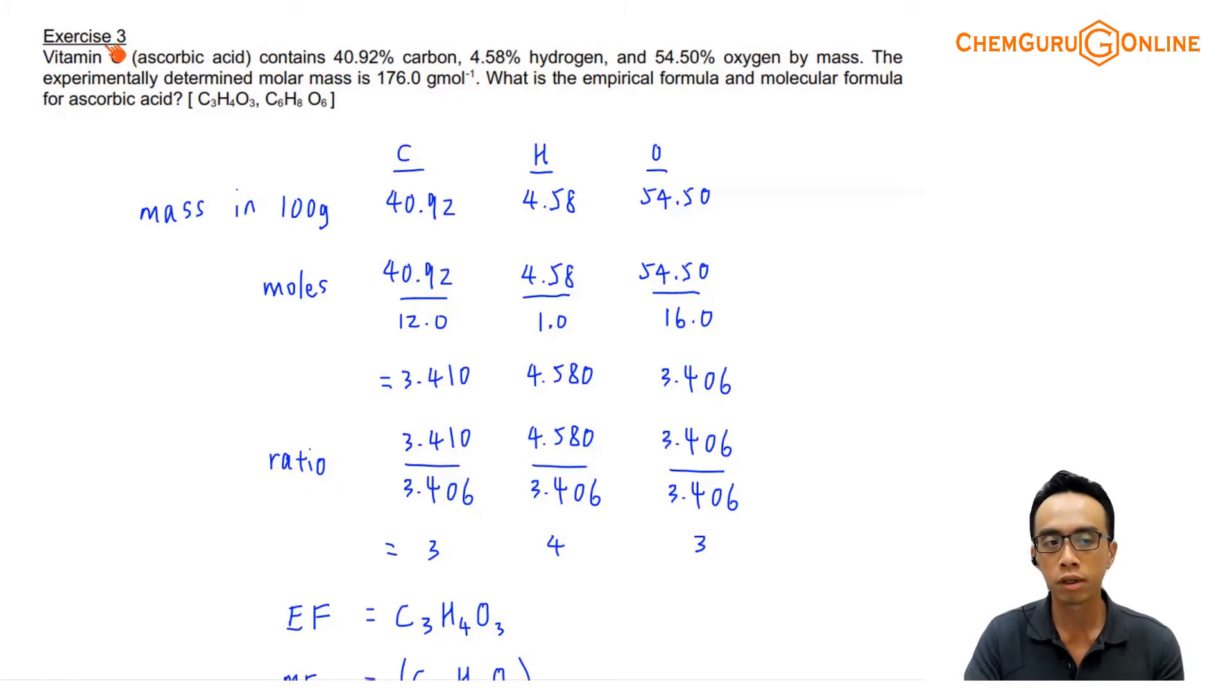Exercise 3. Given vitamin C, contains all these different percentages of my carbon, hydrogen, and oxygen by mass. Correct? Then experimentally, determine molar mass is 176.0. What is the empirical formula and the molecular formula for ascorbic acid?